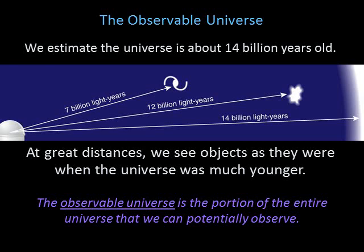The light from a galaxy 12 billion light years away took 12 billion years to reach us, so we see that galaxy as it was 12 billion years ago. If we try to look beyond 14 billion light years, we'd be looking to a time more than 14 billion years ago — before the universe existed — so there's nothing for us to see. The distance of 14 billion light years therefore marks the boundary, or the horizon, of the observable universe — the portion of the entire universe that we could potentially observe.